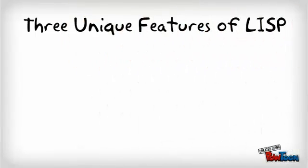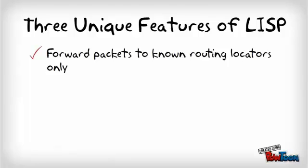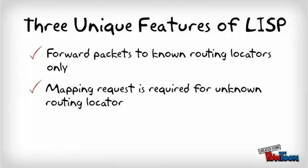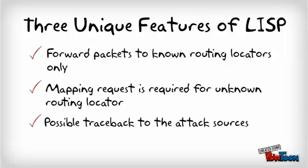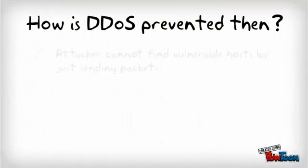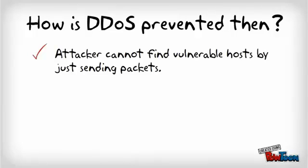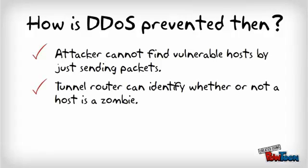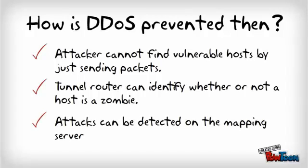From the mapping service, we can see that LISP has three unique features. First, packets can only be forwarded to a known routing locator. Second, a mapping request is required if the routing locator is unknown. Third, it is possible to trace back to the attack sources as the egress tunnel router would know where the packets come from. DDoS can be prevented as attackers cannot find vulnerable hosts by just sending packets. The tunnel router can also identify if a host is a zombie. Moreover, attacks can also be detected on the mapping server.